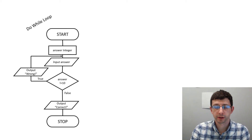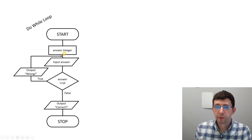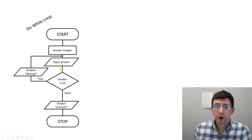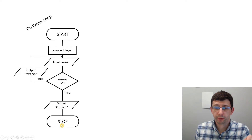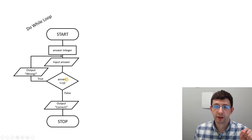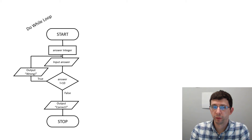Now let's look at how a do-while loop is different. Here we declare the integer variable 'answer', ask the user to type in their answer, and then check if it's not equal to 10. If it isn't, we loop back, output 'wrong answer', and ask for input again. When the user types 10, the condition evaluates to false and we output 'correct' and stop. Notice we don't need to duplicate the input statement, because the condition is evaluated at the end.